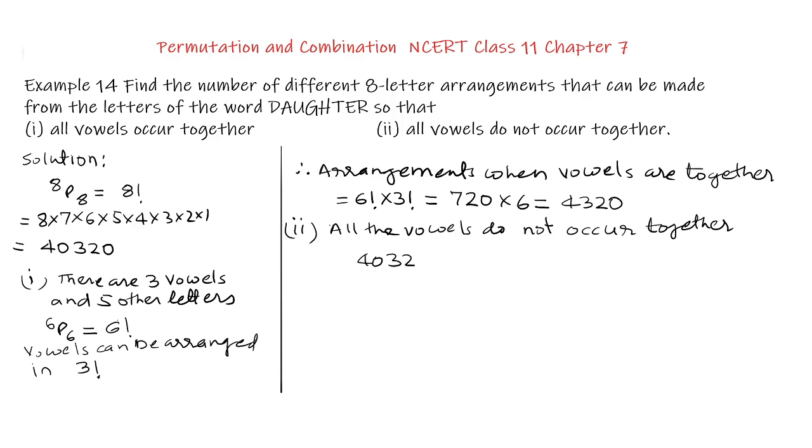40,320 minus 4,320. This is equal to 36,000. Thus the answer of part 2 is 36,000. Such arrangements are there where vowels do not occur together.